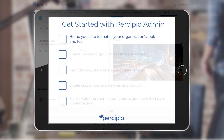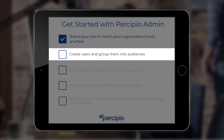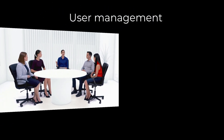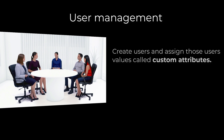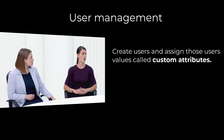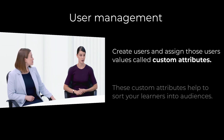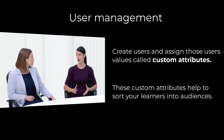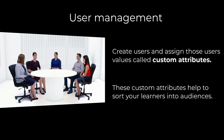Next, think about your learning audiences. How would you like to distribute content to your learners and report on their learning once they start using Percipio? You can do this through user management. You can create users and assign those users values called custom attributes. These custom attributes help to sort your learners into audiences.